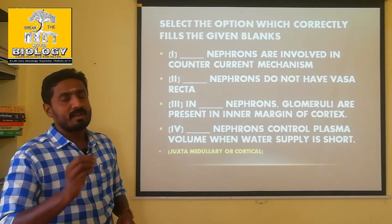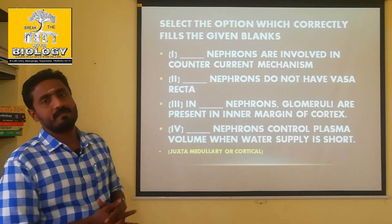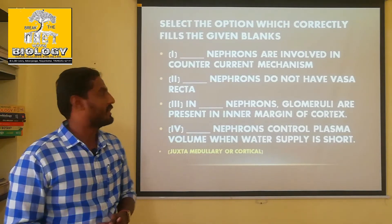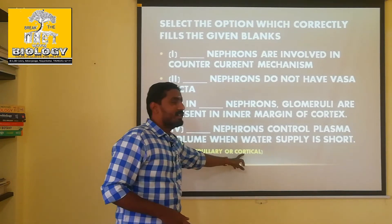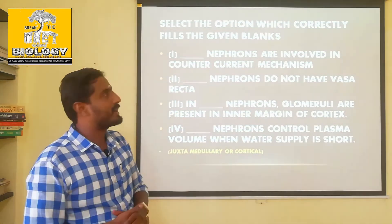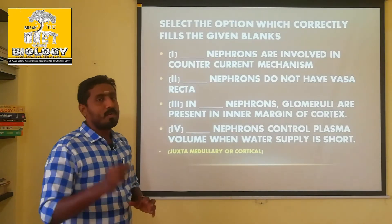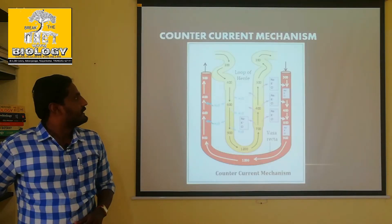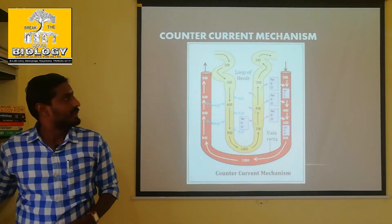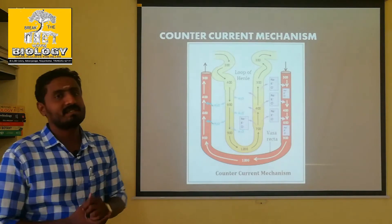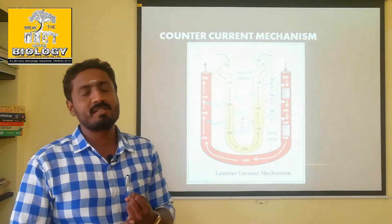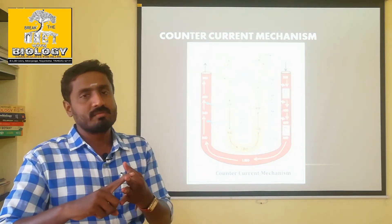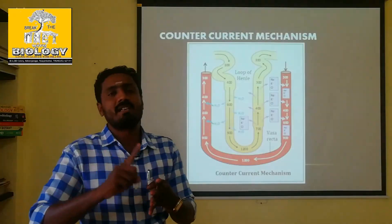What is the nature of this question? First one: dash nephrons are involved in counter-current mechanism. Juxta medullary and cortical — those are the options. Nephrons have 4 parts: the glomerulus apparatus, Bowman's capsule, Proximal Convoluted Tubule, Henle's Loop, and Distal Convoluted Tubule.